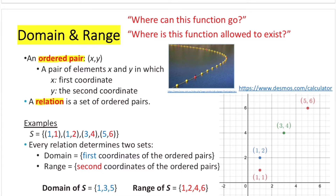For the domain, we take all the first coordinates of each of the ordered pairs. I've color coded them — so it's all the blue numbers. The domain will be 1, 3, and 5. The reason why we only write 1 once is because we don't repeat ourselves. So even if you have two or more values that are the same, we only count each value once. The domain of this relation is 1, 3, and 5.